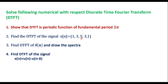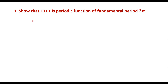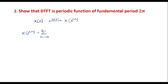Let me consider the first one. We know that the DTFT of any discrete sequence x(n) is given by X(e^{jω}), which is defined as the summation from n = −∞ to ∞ of x(n) e^{−jωn}. This is the basic definition of discrete time Fourier transform.